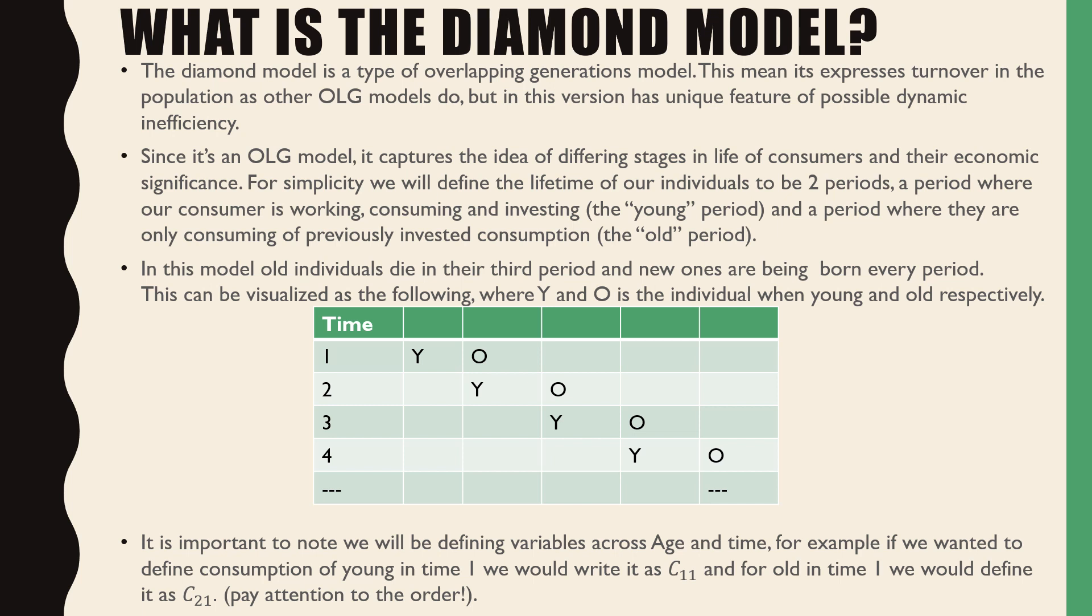A period where our consumer is working, consuming and investing, which is the young period, and the period where they are only consuming previously invested consumption, which is the old period. In this model individuals die in their third period and new ones are constantly being born.